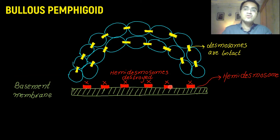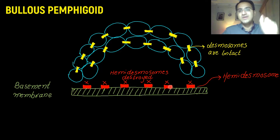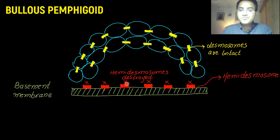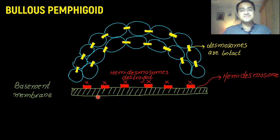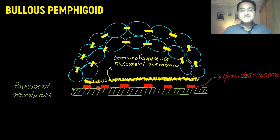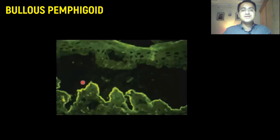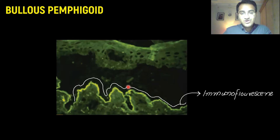Another technique used for detection of bullous pemphigoid is immunofluorescence. In immunofluorescence, we apply a stain that binds the antibodies destroying hemidesmosomes. Since hemidesmosomes are present around the basement membrane, the antibodies are also present there, and the stain binds them, giving a bright color in a linear pattern along the basement membrane. Here you can see the linear pattern of immunofluorescence along the basement membrane.